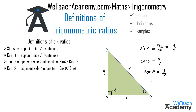The next ratio is cot theta, which is adjacent side by opposite side, or cos theta by sine theta, or the reciprocal of tan theta. So we can write cot theta equals one by tan theta, which gives us x by y.